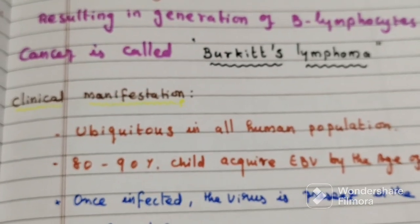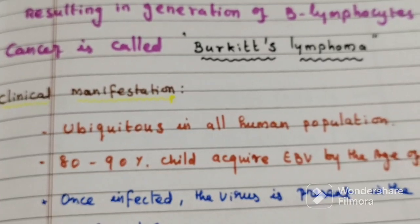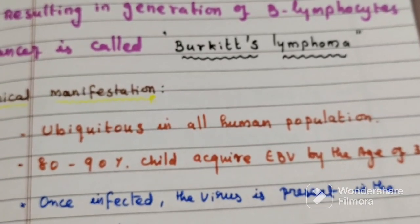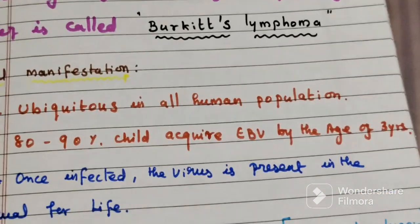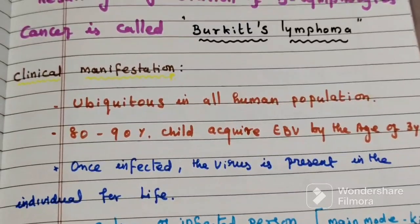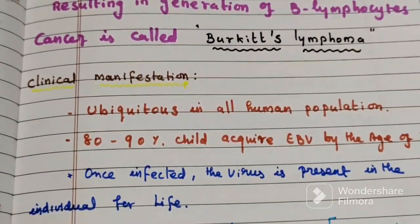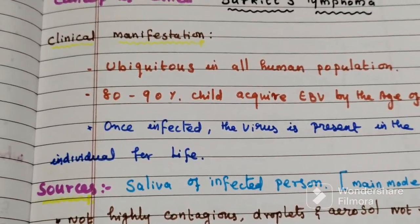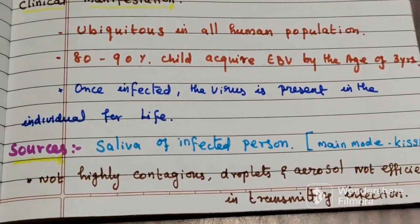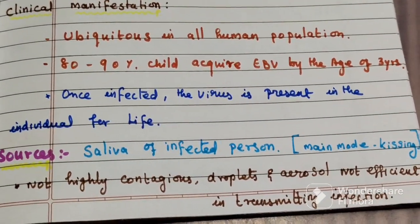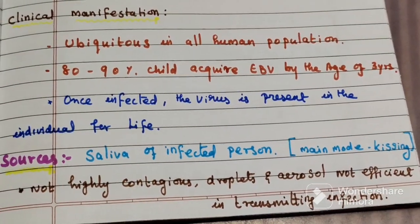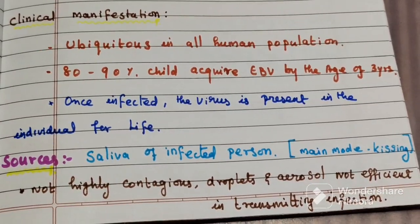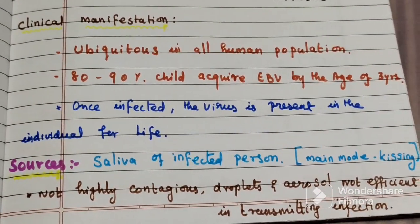Clinical manifestations: Epstein-Barr virus is ubiquitous in all human populations, and 80 to 90 percent of children acquire EBV infection by the age of 3 years. Once infected, this virus is present in the individual for life. The source of infection is usually the saliva of an infected person. The main mode of transmission is kissing. The virus is not highly contagious; droplets and aerosols are not efficient in transmitting infection.